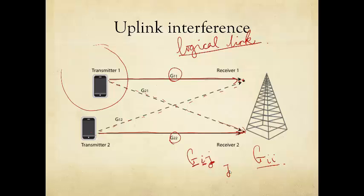But when j is not equal to i, for example, G21, that says this is from the transmitter of pair one over here to the receiver of pair two. And therefore, this is the channel gain of an interference channel. G12 says this is from the transmitter of pair two to the receiver of pair one. And in general, G12 is not necessarily equal to G21.